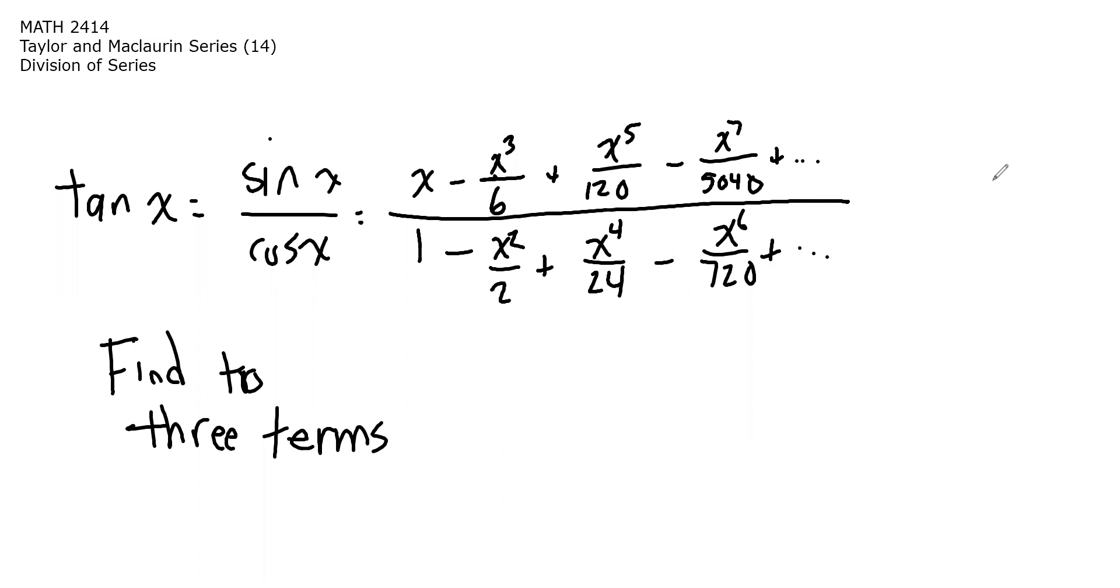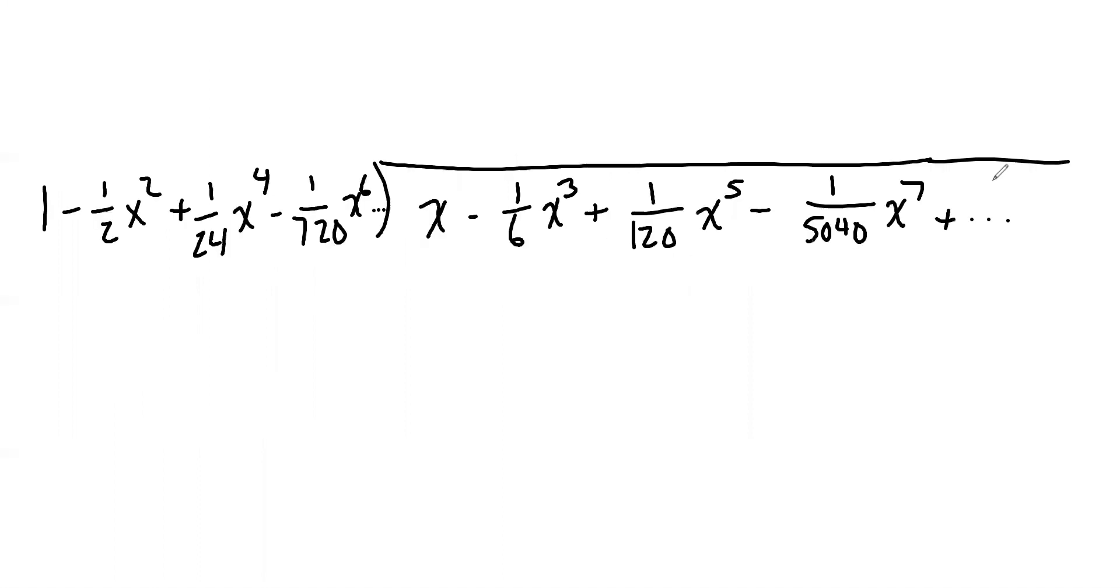So how do we do this? Well, in a couple of words, long division. I've already got the long division problem set up. The guy on the inside of the division house is the power series for sine of x. The guy on the outside is the power series for cosine of x. So let's just get to it like we would normally do long division. And if you haven't done polynomial long division in a while and need a refresher, let me know. I'll hook you up with some college algebra videos I have.